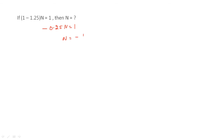N would be minus 1 over 0.25, which is the same as minus 100 by 25, which equals minus 4. So our answer is C. Thank you.